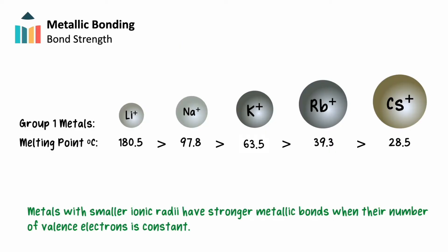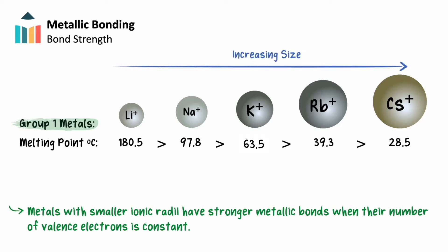When examining the size of the metal cation alone, without a variation in its number of valence electrons, metals with fewer energy levels exhibit stronger metallic bonding, as their smaller ionic radius allows them to pack more tightly into their lattice and feel stronger attractive forces. We see this trend in the melting points of group 1 alkali metals. As we go down the group, ionic radius increases due to the increasing number of energy levels, so melting point increases in the opposite direction, with smaller metals such as lithium forming the strongest metallic bonds of the group.